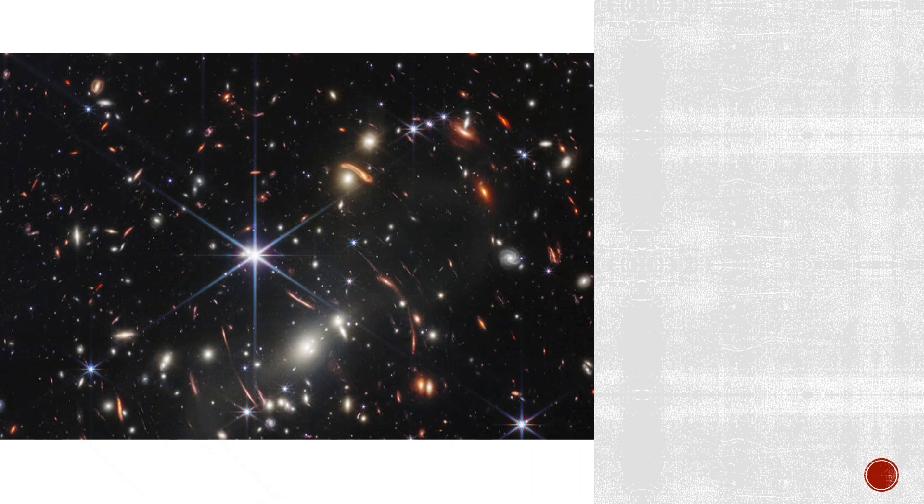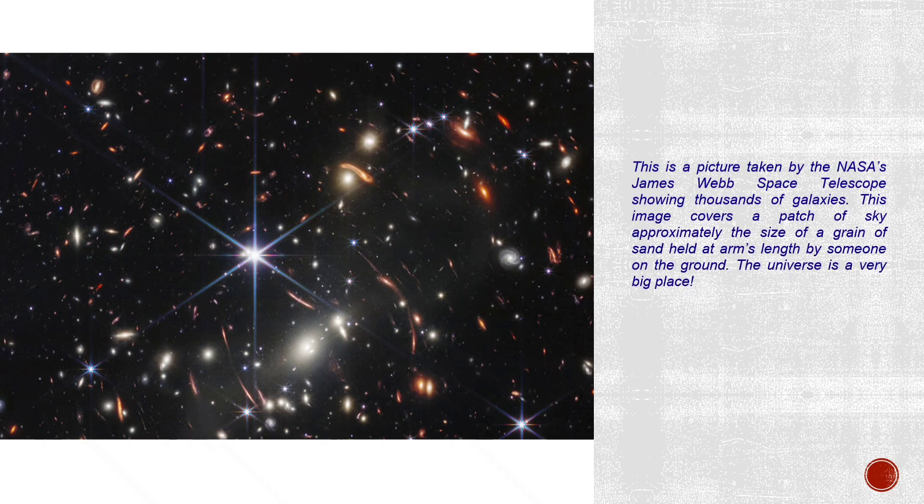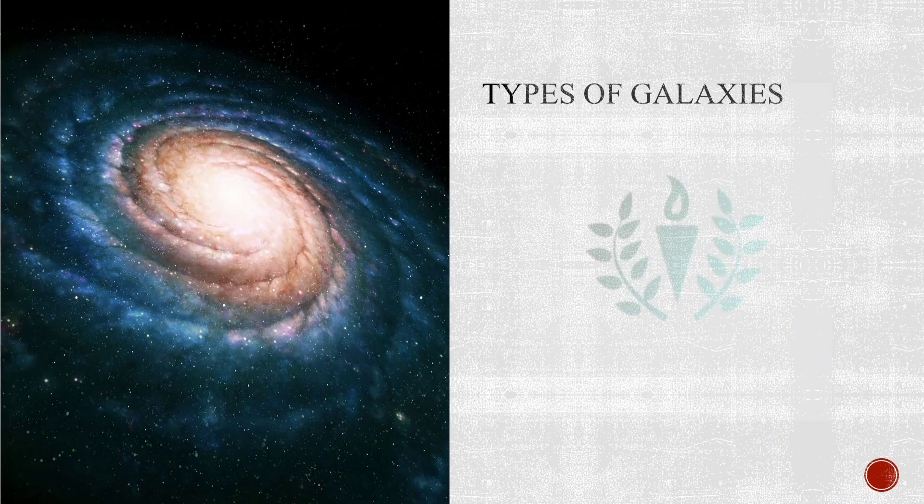Some scientists think there could be as many as 100 billion galaxies in the universe, which is a lot. This is a picture taken by NASA's James Webb Space Telescope which shows thousands of galaxies. It only covers a patch of sky approximately the size of a grain of sand held at arm's length by someone on the ground.